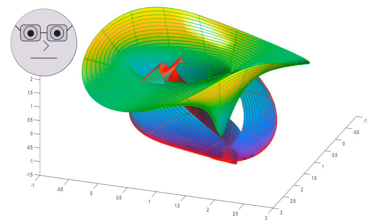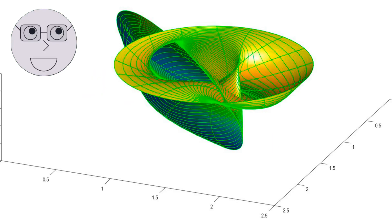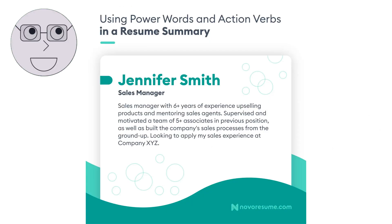Riemann surfaces are also used to study moduli spaces, which are spaces that parameterize families of algebraic curves. In number theory, Riemann surfaces are used to study the properties of elliptic curves, which are curves that can be described by cubic equations. They are also used to study the distribution of prime numbers, which is one of the most important problems in number theory. In physics, Riemann surfaces have applications in string theory, which is the theoretical framework that attempts to unify all the fundamental forces of nature. They are also used to study the behavior of fluids and gases, which have complex and nonlinear dynamics.